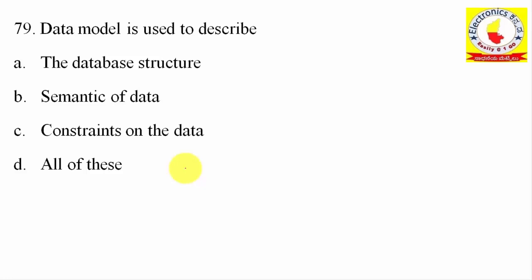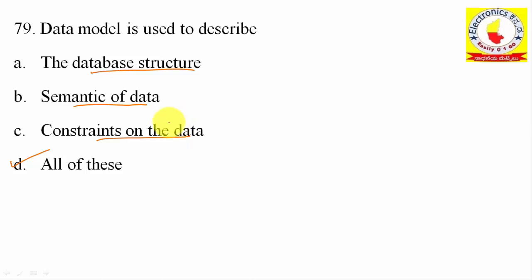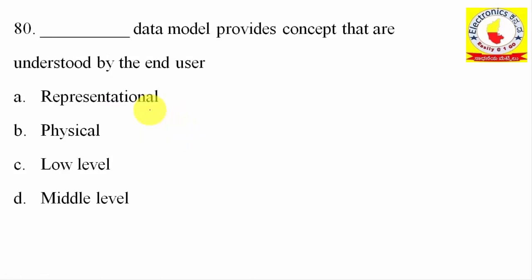79th question: A data model is used to describe database structure, semantics of data, and constraints on the data — all of these. So option D is going to be followed.